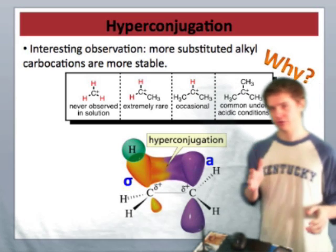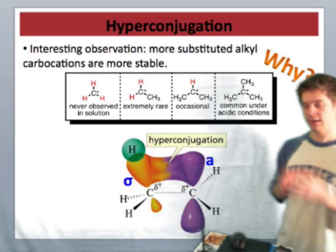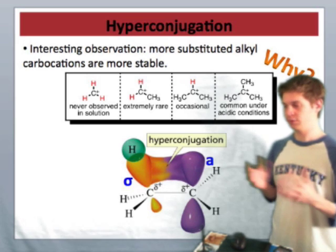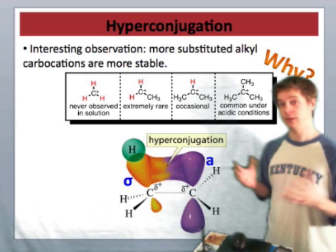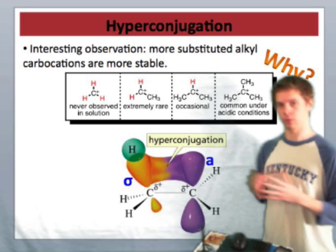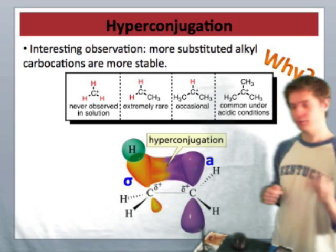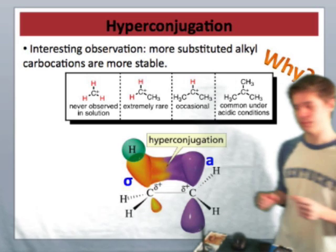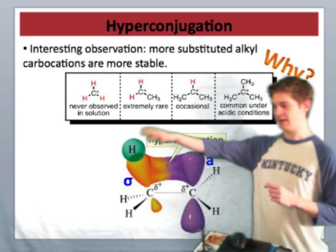So we just saw that cations in their normal state, normal alkyl cations with three substituents, are sp2 hybridized possessing a 2p orbital. If there are filled sigma orbitals adjacent to that p orbital, we can get pi-type overlap.